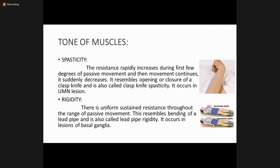In spasticity, the resistance rapidly increases during the first few degrees of passive movement, then suddenly decreases as movement continues — resembling the opening or closing of a clasp knife, also called clasp knife spasticity. It occurs in upper motor neuron lesions. In rigidity, there is uniform sustained resistance throughout the range of passive movement, resembling bending a lead pipe — also called lead pipe rigidity. It occurs in lesions of the basal ganglia.